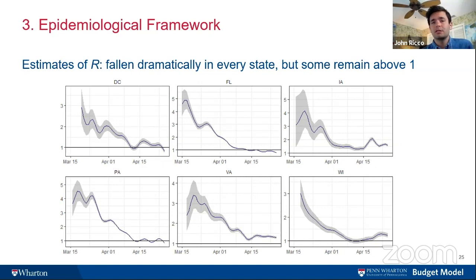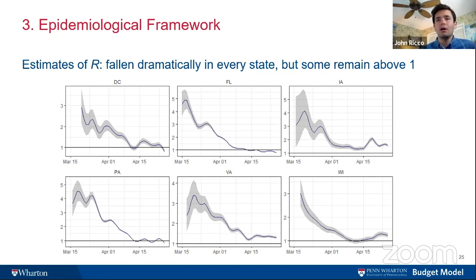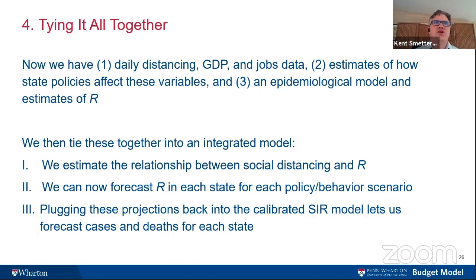We can see our estimates for a representative selection of states. Our estimates show that R started off around three to five depending on the state. Since lockdown orders came into effect and since people started socially distancing on their own, we've seen it fall uniformly across every state to levels around slightly above one or slightly below one. Some states are up and down right now, but this speaks to how things have trended so far. R is such a crucial variable in all of this, and the uncertainty bands are quite wide at this point simply because we're in the early days.